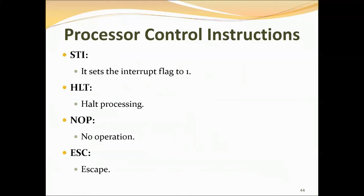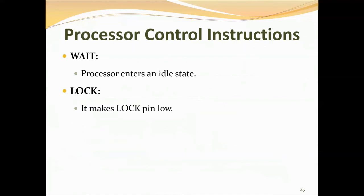Next is ESC (escape). This instruction makes the bus free for an external master like a coprocessor or peripheral device. It performs no operation as far as the 8086 is concerned but allows a coprocessor to receive its instructions from the 8086 instruction stream. Next is WAIT. When the WAIT instruction is executed, the processor enters an idle state where it does no processing. The processor remains idle until the TEST pin is made low or until an INTR or NMI interrupt occurs. After executing the interrupt service subroutine, the processor returns to the idle state because the address of the WAIT instruction is pushed on the stack when the processor responds to the interrupt.